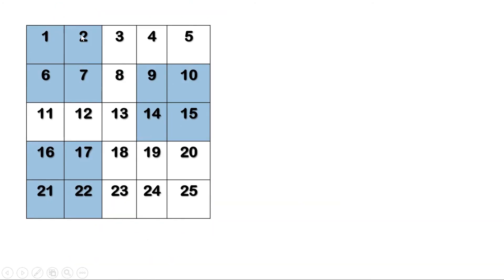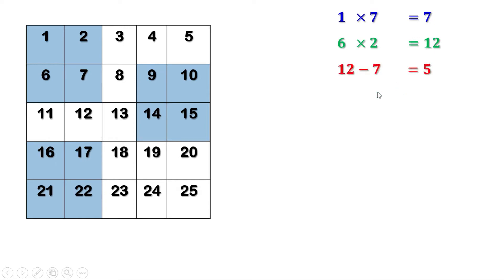Let us first write the numbers. I have marked some squares of 4 numbers. Let us find the diagonal products. 1 into 7 is 7. 6 into 2 is 12. The difference is 12 minus 7, which is 5. Now let us take the second square of 4 numbers. 9 into 15 is 135. 14 into 10 is 140. The difference is again 5.